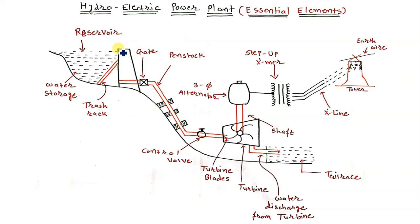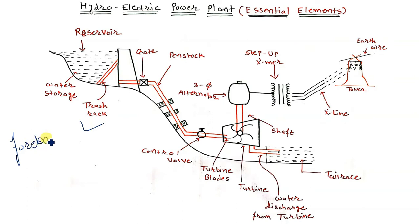The next element is the trash rack. Trash racks are made of steel bars and their purpose is to prevent the entry of debris from the forebay — we will discuss the forebay later in this lecture. For now just remember that the trash rack prevents debris from entering.